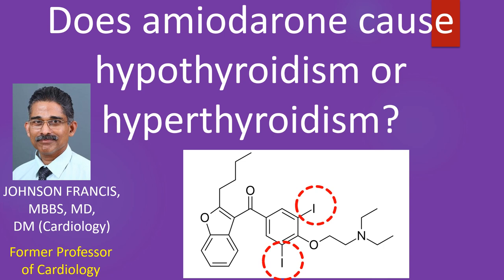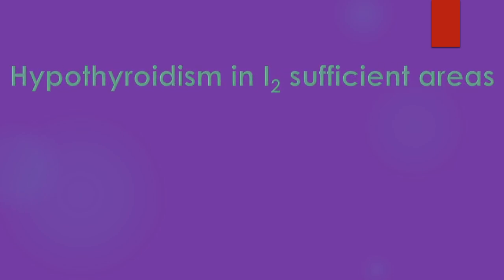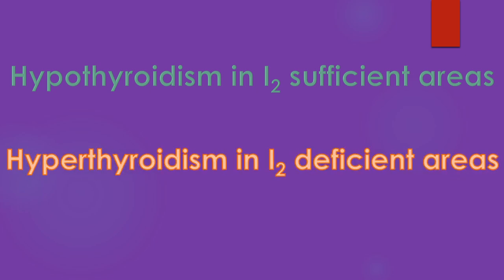Amiodarone causes thyroid dysfunction by virtue of its high iodine content. It can cause hypothyroidism, hyperthyroidism, and thyroiditis. Amiodarone is one of the most widely used antiarrhythmic drugs. 200 mg of amiodarone daily would deliver 20-40 times the usual daily iodine intake. Hypothyroidism occurs in iodine-sufficient areas, and hyperthyroidism occurs in iodine-deficient areas.